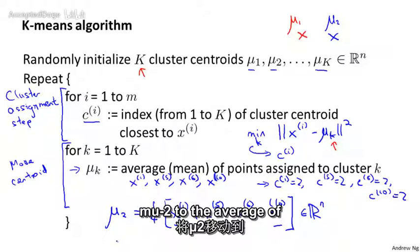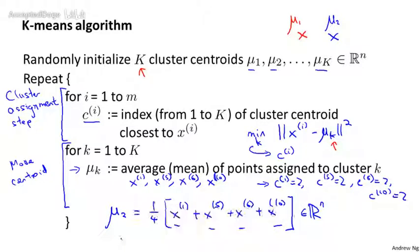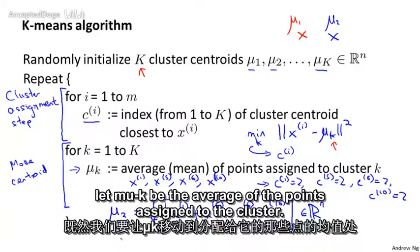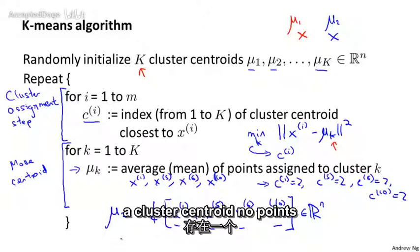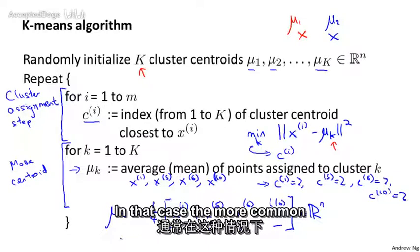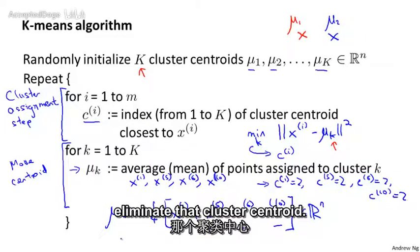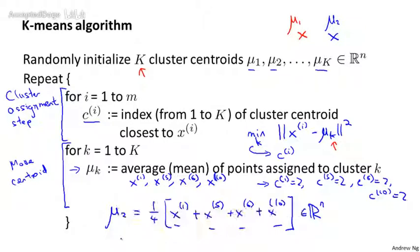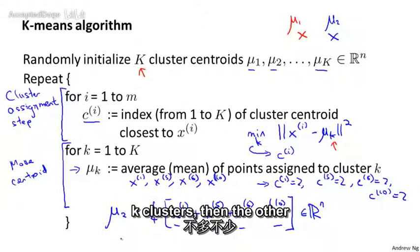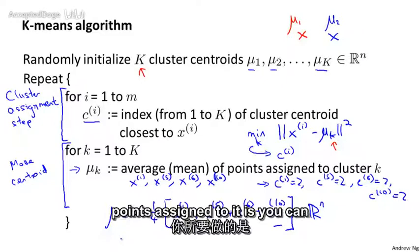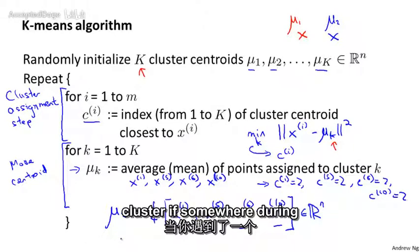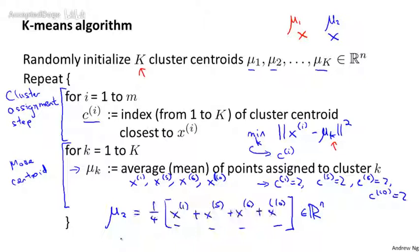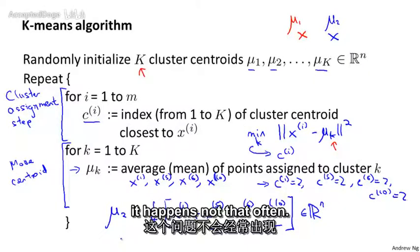One question that sometimes comes up: what if there's a cluster centroid with no points assigned to it? The more common thing to do is to just eliminate that cluster centroid, and you end up with k minus 1 clusters instead of k clusters. But if you really need k clusters, you can randomly re-initialize that cluster centroid. It is more common to just eliminate a cluster if it ends up with no points assigned to it, though in practice this doesn't happen that often.